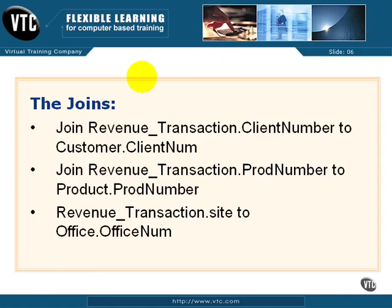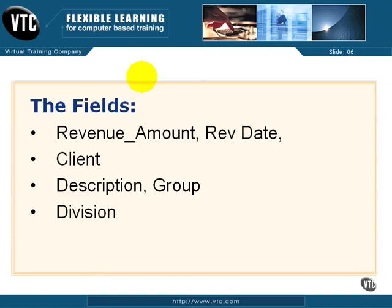Normally, your DBA or system expert can help you with these relationships. So in your own case, if you don't have one of those guys, you've got some work to do. The fields you're going to pull in are revenue_amount and revenue_date. Then you're going to pull in client, then description, group, and division. Since this is a small database, I'm going to let you figure out which fields belong to which tables — it won't take you very long. Just looking at the screen in the select expert or the report wizard shouldn't take you more than five seconds.